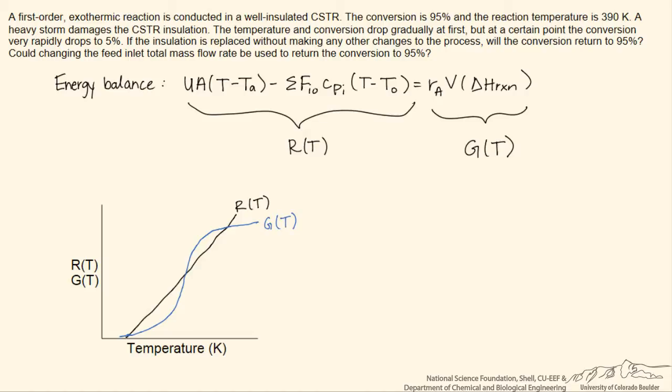But then at some point, once we get the complete conversion, then the reaction rate will level off with temperature, that we can only consume all our reactant and generate that much heat. And so we expect that we have to level off at some constant value at higher temperature. And so the G curve has this kind of shape.